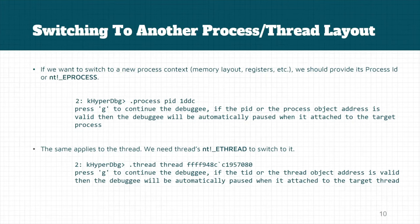After that we should continue the debugger, so next time the debugger sees this process it will break and give control to the debugger — the debuggee will be halted again. If you want to switch to a specific thread, you should specify its ETHREAD address and use the .thread command, providing the address to the ETHREAD of the target.